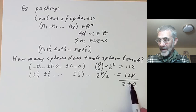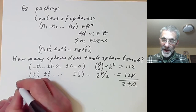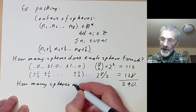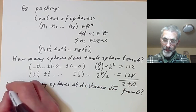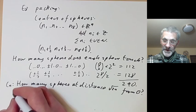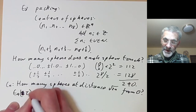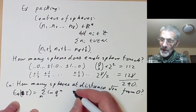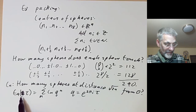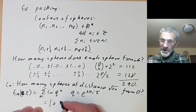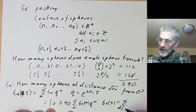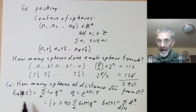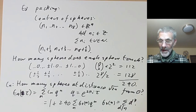More generally, we can ask how many spheres there are at distance √(2n) from the origin; call this number cn. We form the generating function E4(τ) = Σ cn q^n where q = e^(2πiτ). There's a very simple formula: E4(τ) = 1 + 240 Σ σ3(n) q^n, where σ3(n) is the sum of the cubes of the divisors of n. This function is an example of something called a modular form.